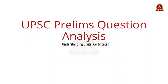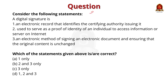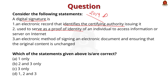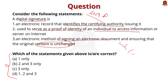Look at this 2019 prelims question. Consider the following statements. A digital signature is an electronic record that identifies the certifying authority issuing it, used to serve as a proof of identity of an individual to access the information or a server on the internet. An electronic method of signing an electronic document and ensuring that the original content is unchanged. Which of the following statements are correct? It is about two different concepts — digital certificates and digital signatures — so let us understand them and come back to this question.